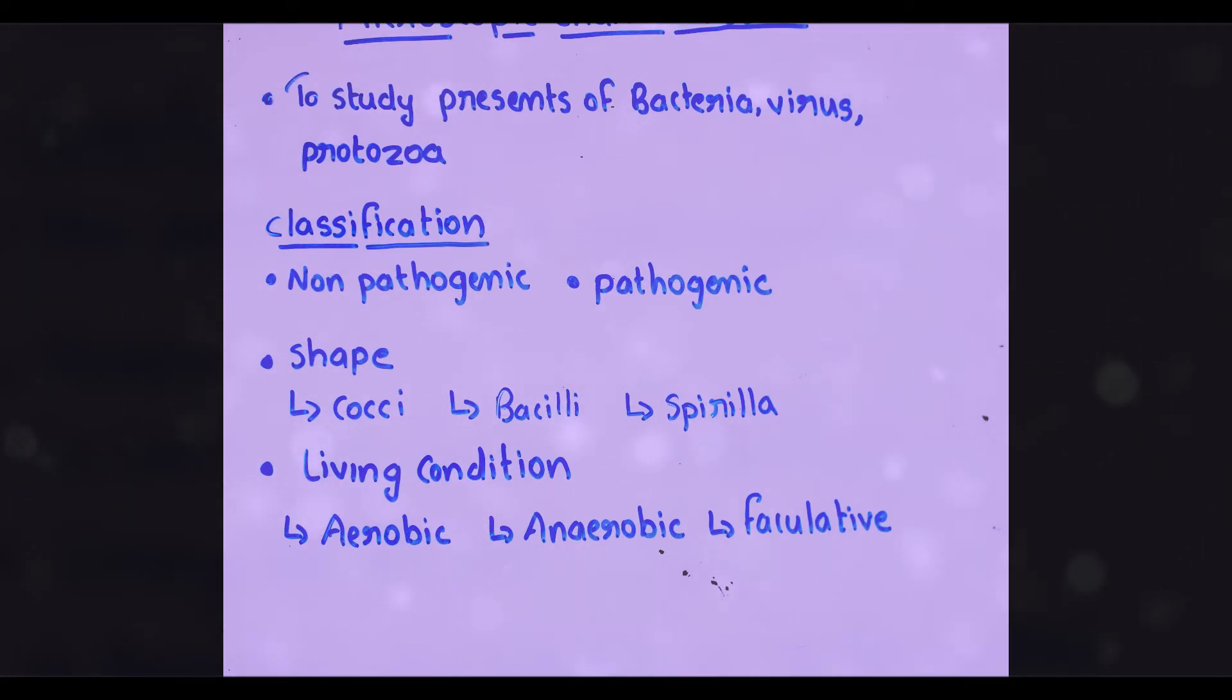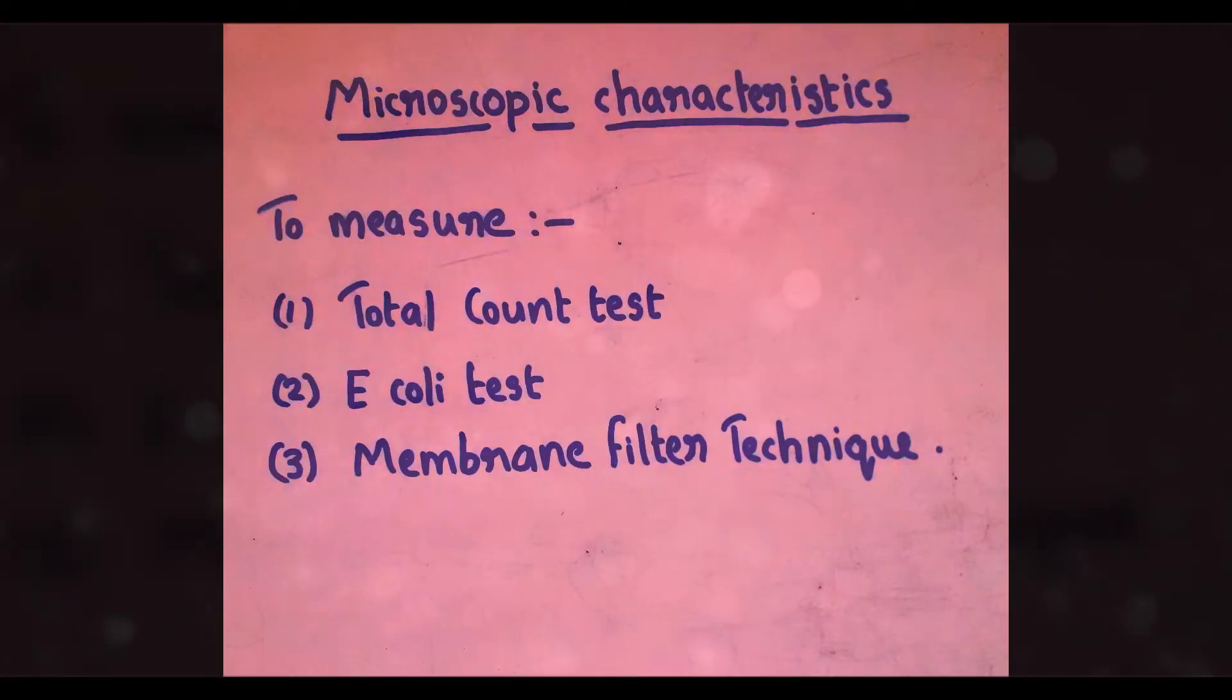To measure coliform bacteria, three types of tests are used. First is Total Count or Agar Plate Count Test. Second is E. coli Test. Third is Membrane Filter Technique. These three types of tests are used to detect coliform bacteria.